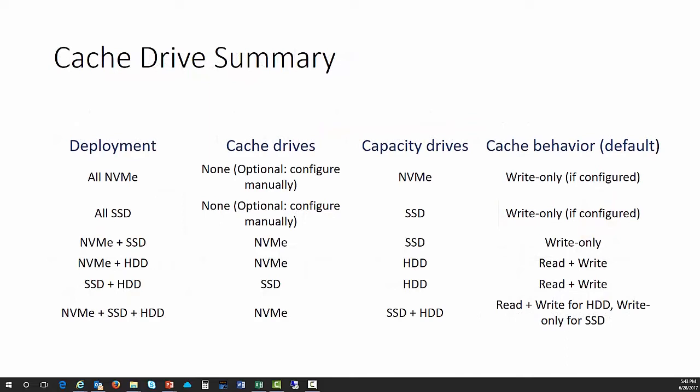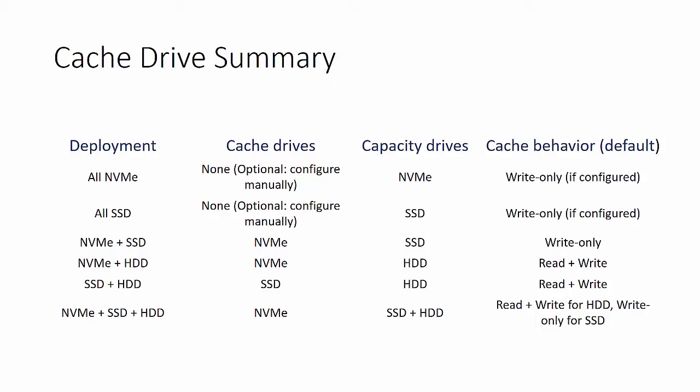Looking at the cache drive summary: for an all-NVMe deployment, there are no cache drives since all drives are high speed — capacity drives are NVMe and cache behavior is write-only. For all-SSD, there are also no cache drives; capacity drives are SSDs and it can be write-only. For NVMe plus SSD, the cache drives are NVMe, capacity drives are SSD, and that is generally write-only.